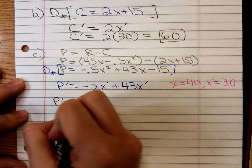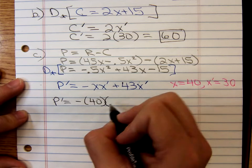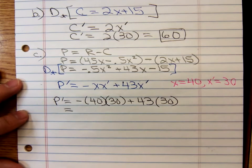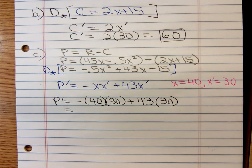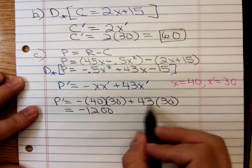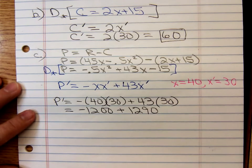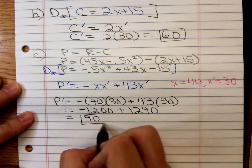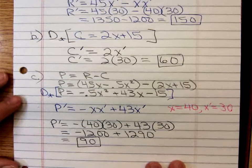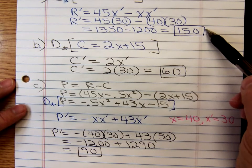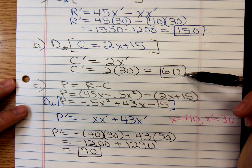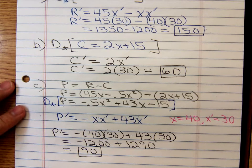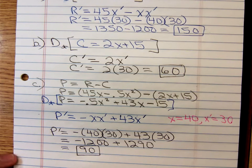Now make the substitutions. You have P prime equals, X is 40, X prime is 30, X prime is another 30. So that's going to give us negative 1,200, that's going to be 1,290. And negative 1,200 plus 1,290, isn't that a positive 90? Is that what you thought it was going to be? If the revenue is increasing at a rate of $150 per day, costs are increasing at a rate of $60 a day, their difference would be the rate at which the profit is increasing, and sure enough, that's $90 a day. 150 minus 60, if you had done that, you would have gotten the correct final answer.